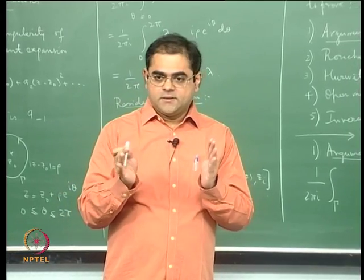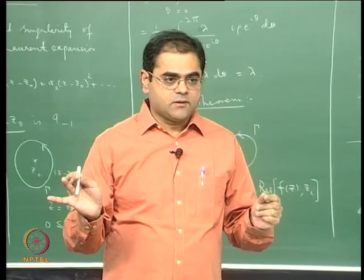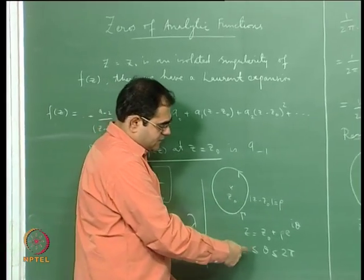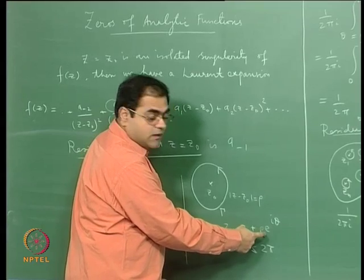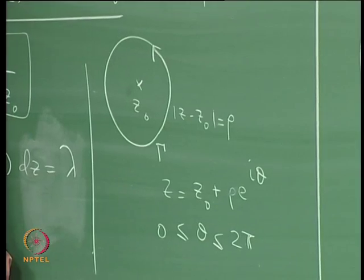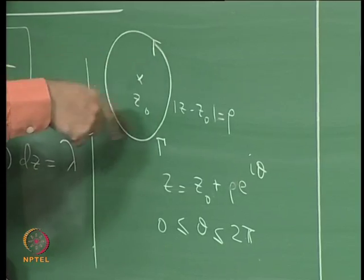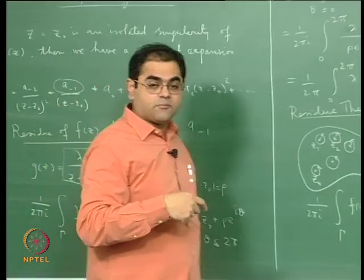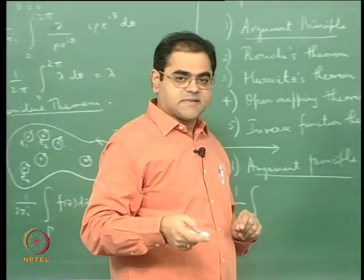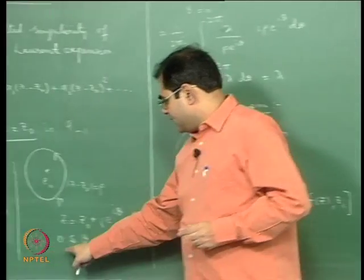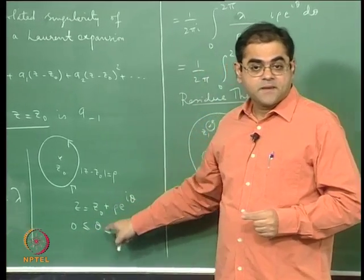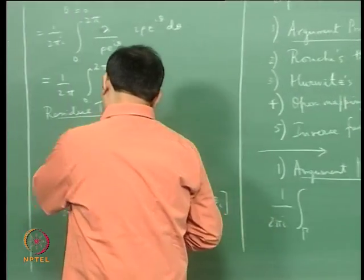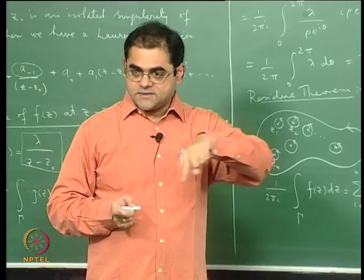By a curve generally we mean the continuous image of a closed interval, say [0,1], on the complex plane. The circle is a curve because it is the image of [0, 2π] under the function θ → z0 + ρe^{iθ}. It is a closed curve if the initial point equals the final point. The orientation is given by the direction of increase of the parameter.